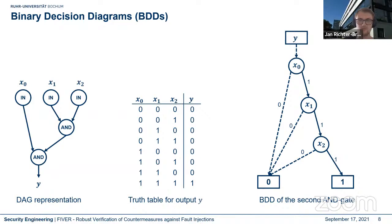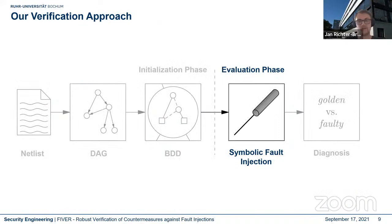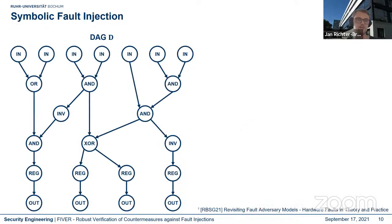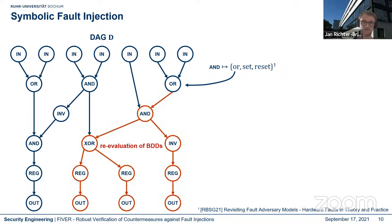Then we go into the evaluation phase where we perform symbolic fault injection. We take the DAG and use a fault model defined by a text file specifying how Boolean functions can be replaced — for example, the fault model considers replacing an AND gate by an OR gate, or a set/reset fault. Replacing a gate leads to reevaluation of all nodes along the propagation path, resulting in a faulty DAG D'. In the diagnostic step, we take the golden DAG D and faulty DAG D', compute XORs of the outputs using additional BDDs, and efficiently count all ones at the output — if a fault is effective it appears as a one at the XOR output.